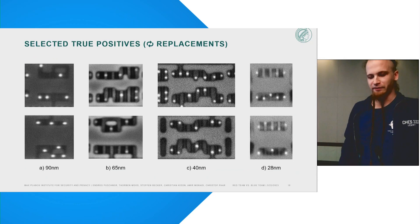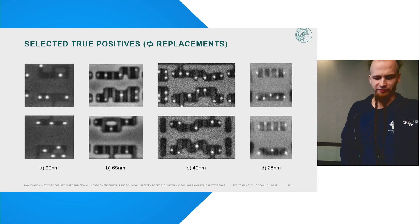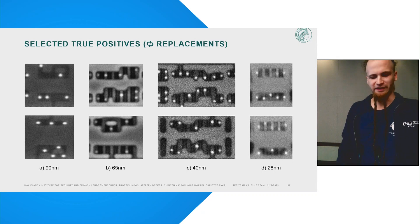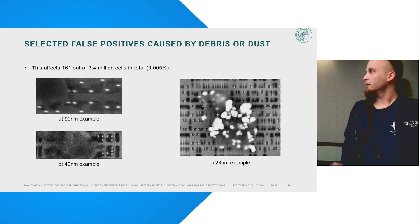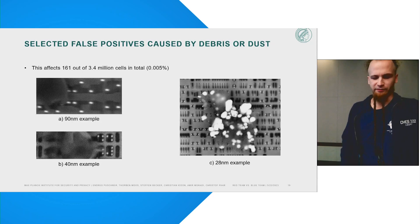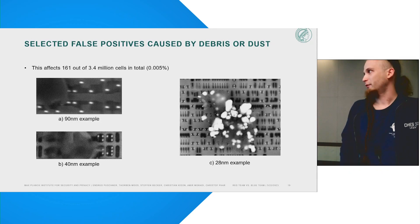Here are some of the detected cell replacements. On the top row are the golden references, and on the bottom row are the actual cell instances. Though they look all rather different, it would be laborious to find these among millions of other cells by hand. However, not everything is perfect, as these images show. Here is some dust or debris settled on the chip samples, covering the cell layout. The reason is that we have no clean room available for our imaging process.